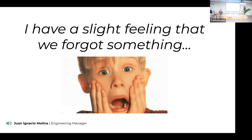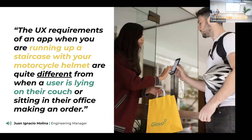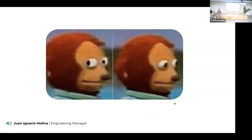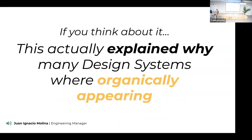Like in Home Alone when they forget the kid, about a month and a half in, a high-ranking VP pointed out: 'The UX requirements of an app when you're running up a staircase with your motorcycle helmet are quite different from when your user is lying on the couch making an order.' She essentially destroyed the whole document in one sentence — and she was right.